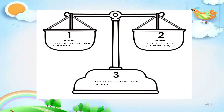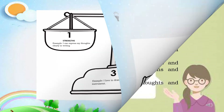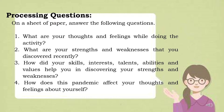Here is the sample for the first box, which is strengths. Example: I can express my thoughts clearly in writing. The second box is weaknesses. Example: I don't feel confident speaking in front of many people. The third box is your skills, interest, talents, abilities, and values. Example: I love to draw and play musical instruments. After finishing the activity, answer these four processing questions on a sheet of paper: 1. What are your thoughts and feelings while doing the activity? 2. What are your strengths and weaknesses that you discovered recently? 3. How did your skills, interests, talents, abilities, and values help you in discovering your strengths and weaknesses? 4. How does this pandemic affect your thoughts and feelings about yourself?